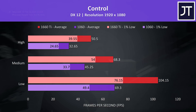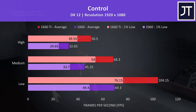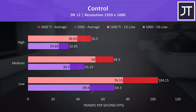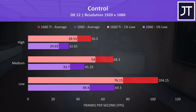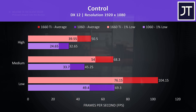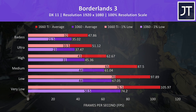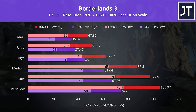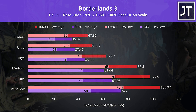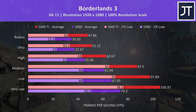Control was tested running through the same area on both machines, and there were huge gains with the 1660 Ti. Regardless of setting used, the 1% low performance from the 1660 Ti laptop was ahead of the averages from the 1060. At high settings the 1660 Ti was 55% faster in average frame rate. Borderlands 3 was tested with the built-in benchmark, with more of a difference at lower settings compared to high and above. At very low settings the 1660 Ti was 43% faster in average FPS.